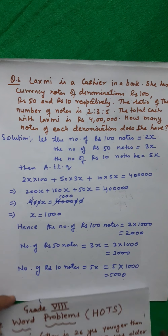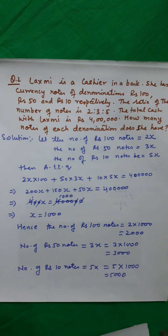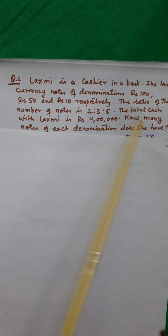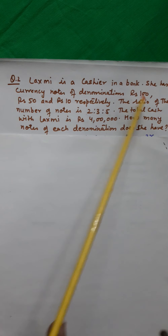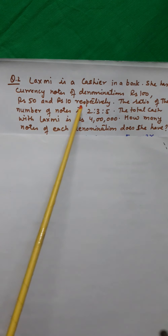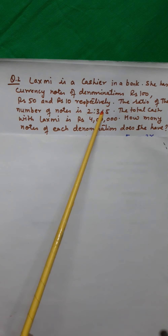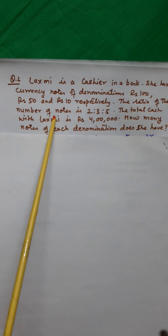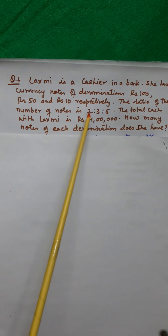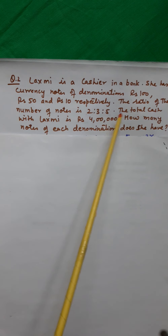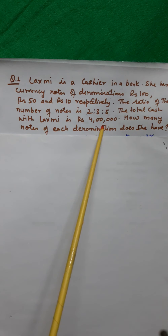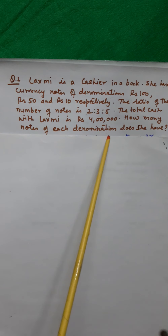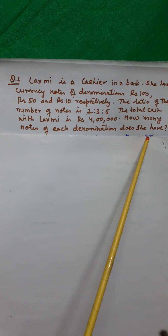Question number 2. Lakshmi is a cashier in a bank. She has currency notes of denominations rupees 100, rupees 50, and rupees 10 respectively. The ratio of the number of notes is 2:3:5. The total cash with Lakshmi is 4 lakhs. How many notes of each denomination does she have?